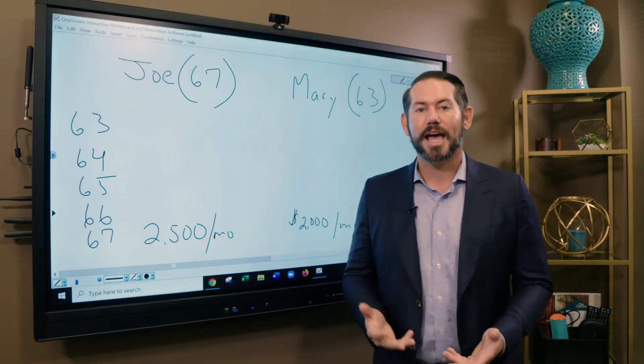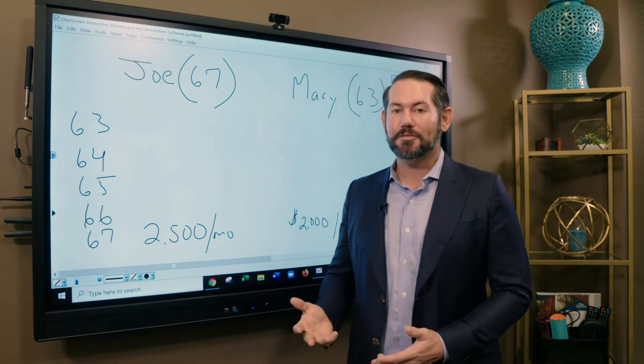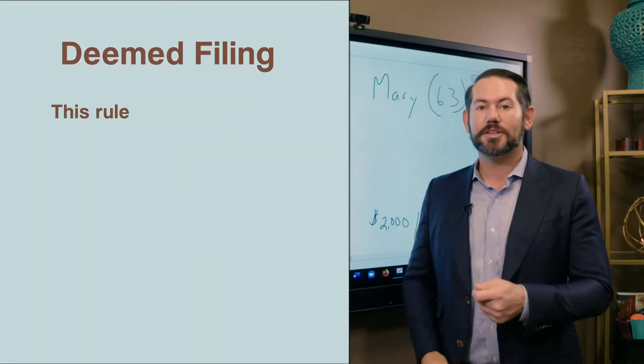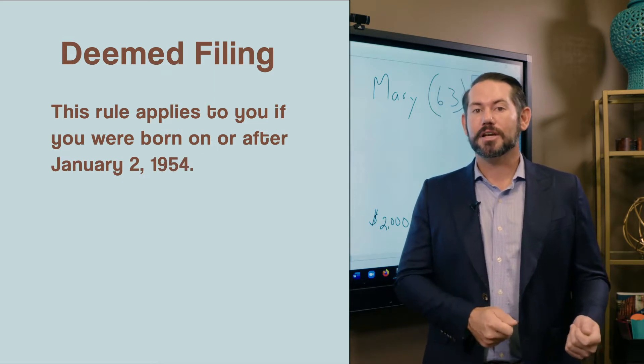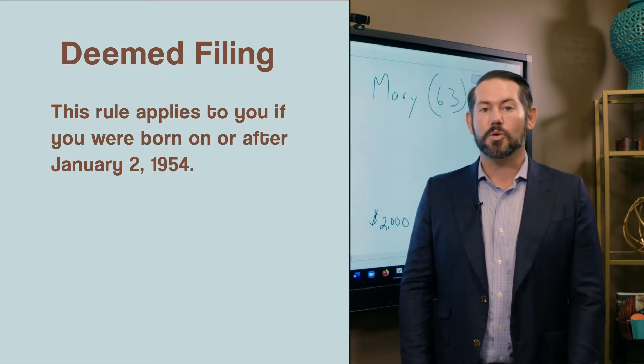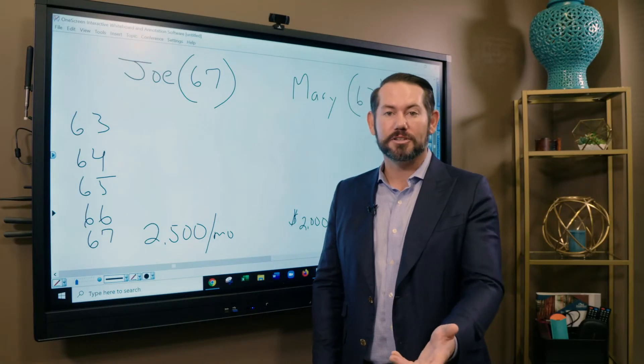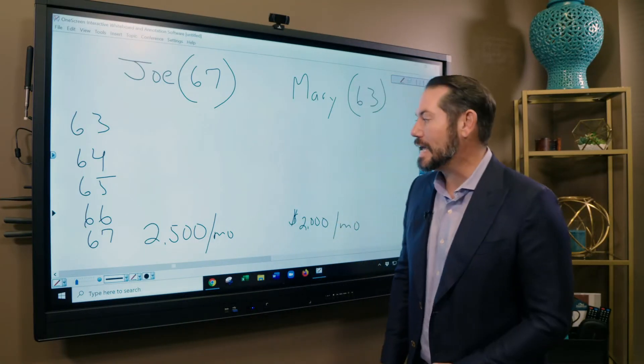When we look at when to take Social Security benefits, you have to be very careful of this deemed filing rule if you were born on or after January 2nd, 1954. The rules changed some time ago, and this applies to you if you're born on or after that date.